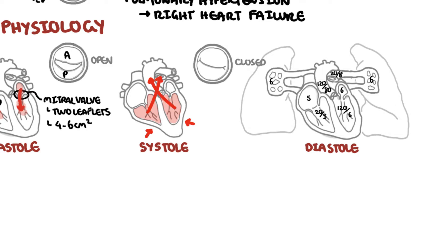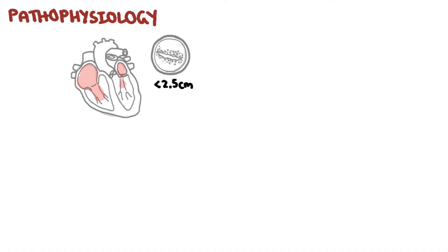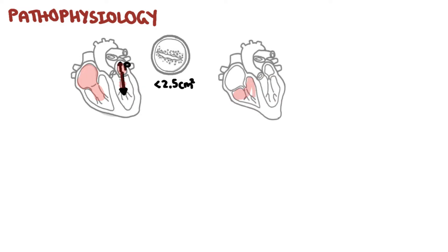The left atrial pressure is 6 mmHg normally. Narrowing of the mitral valve to less than 2.5 cm², as seen in mitral stenosis, will impede the free flow of blood between the left atria and the left ventricle, causing an increase in left atrial pressure. This increase in atrial pressure is required to maintain outflow and adequate cardiac output.